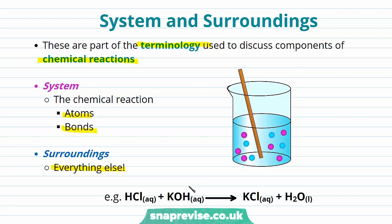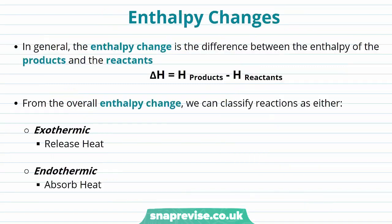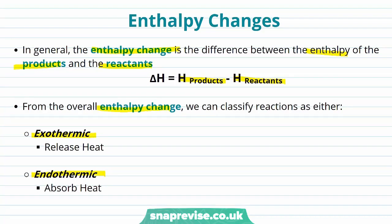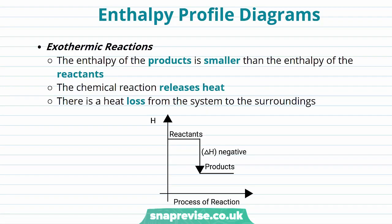Now let's take a look at enthalpy changes. The enthalpy change is the difference between the enthalpy of the products and the reactants: delta H equals the enthalpy of the product minus the enthalpy of the reactants. For the overall enthalpy change, we classify reactions as either exothermic, where heat is released, or endothermic, where heat is absorbed. Let's take a look at the enthalpy profile diagrams of exothermic and endothermic reactions.